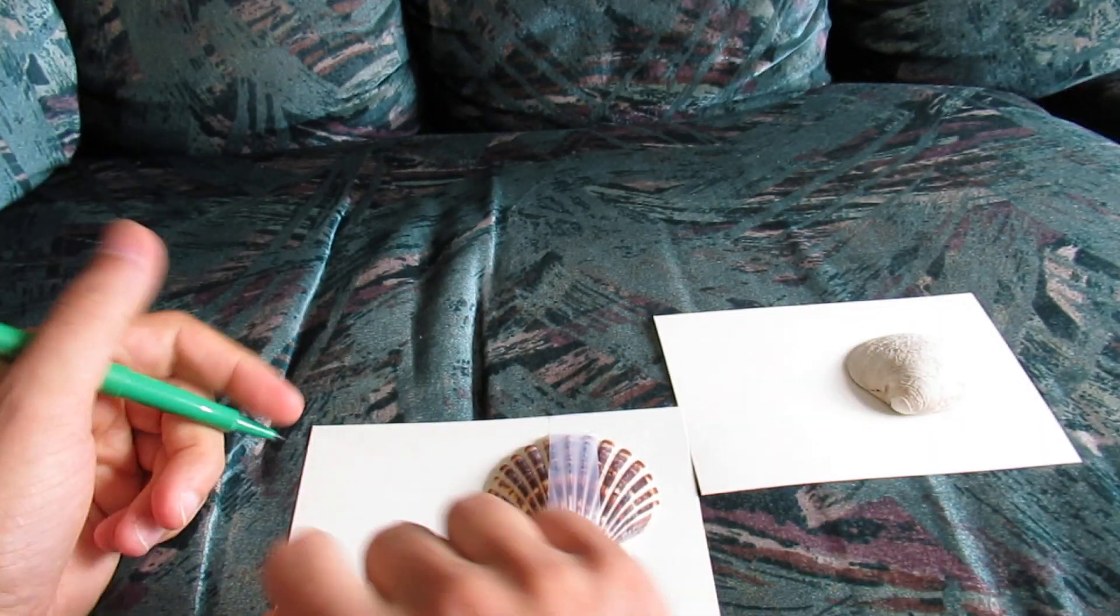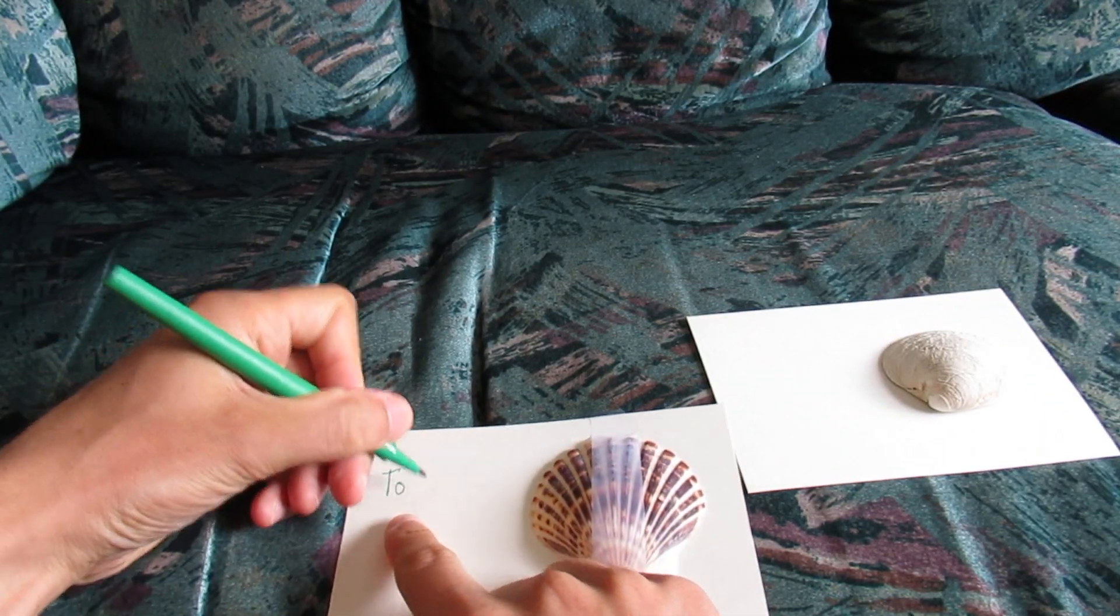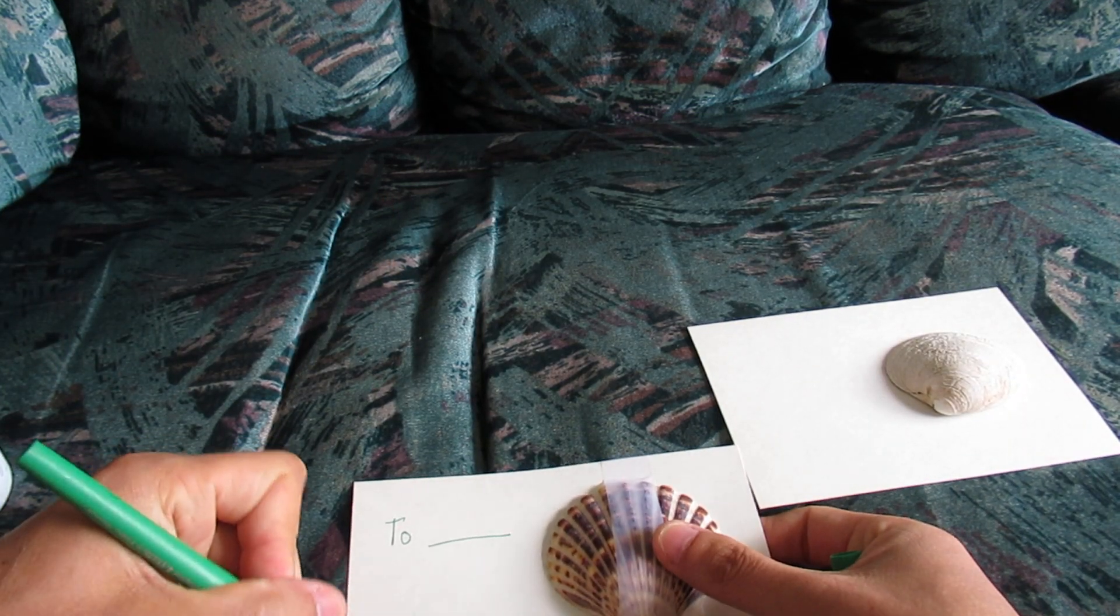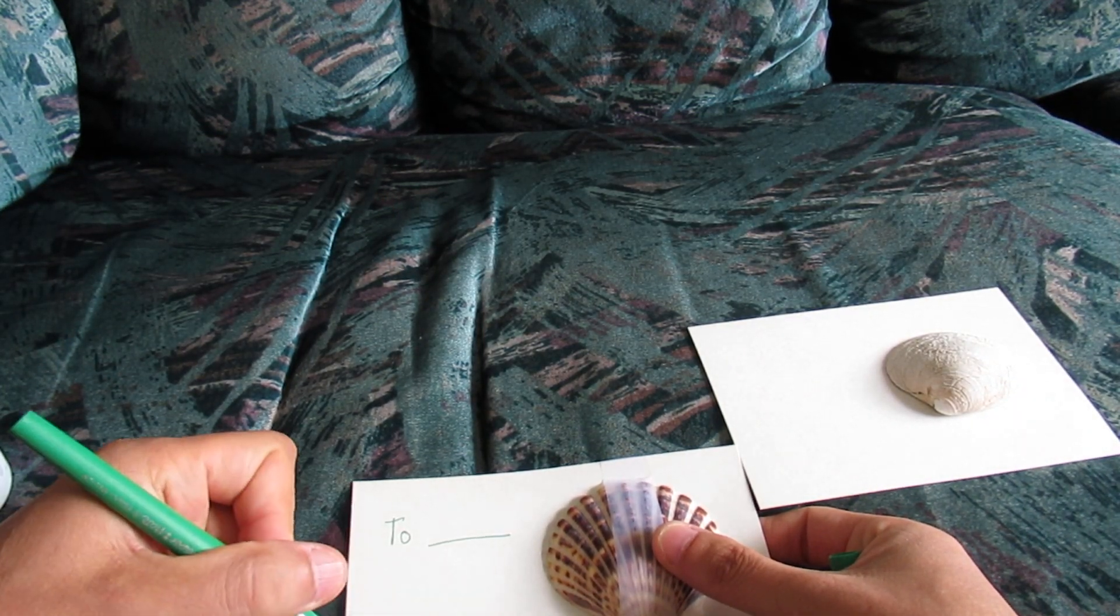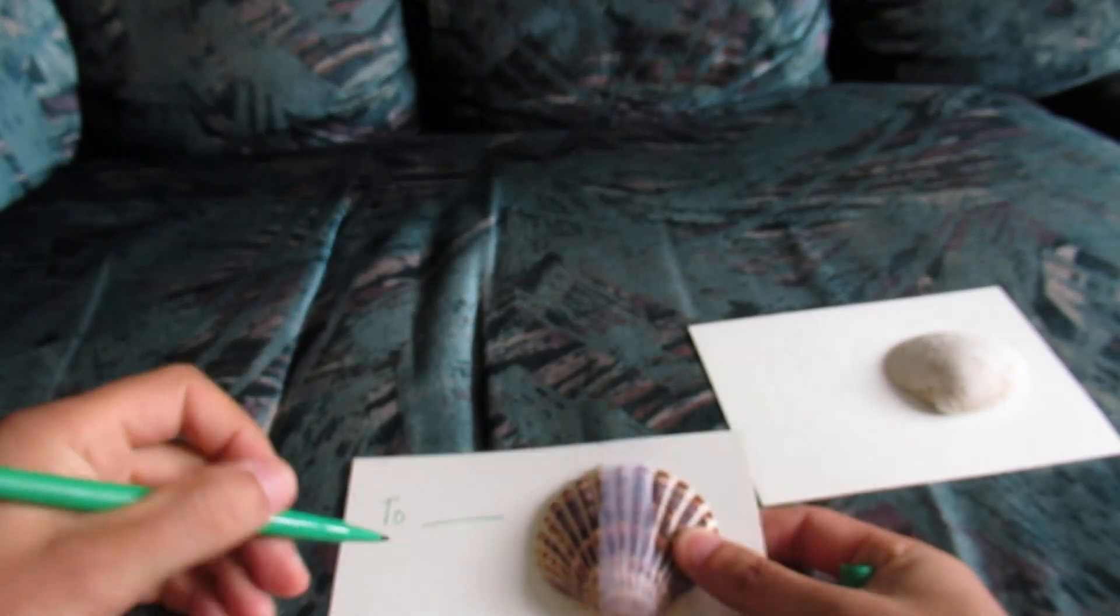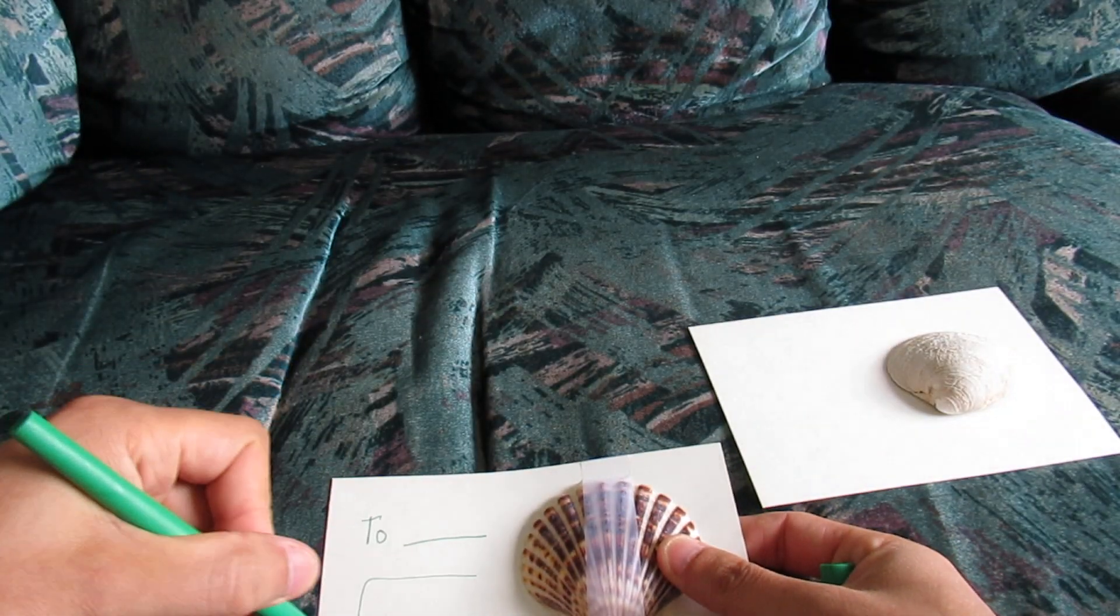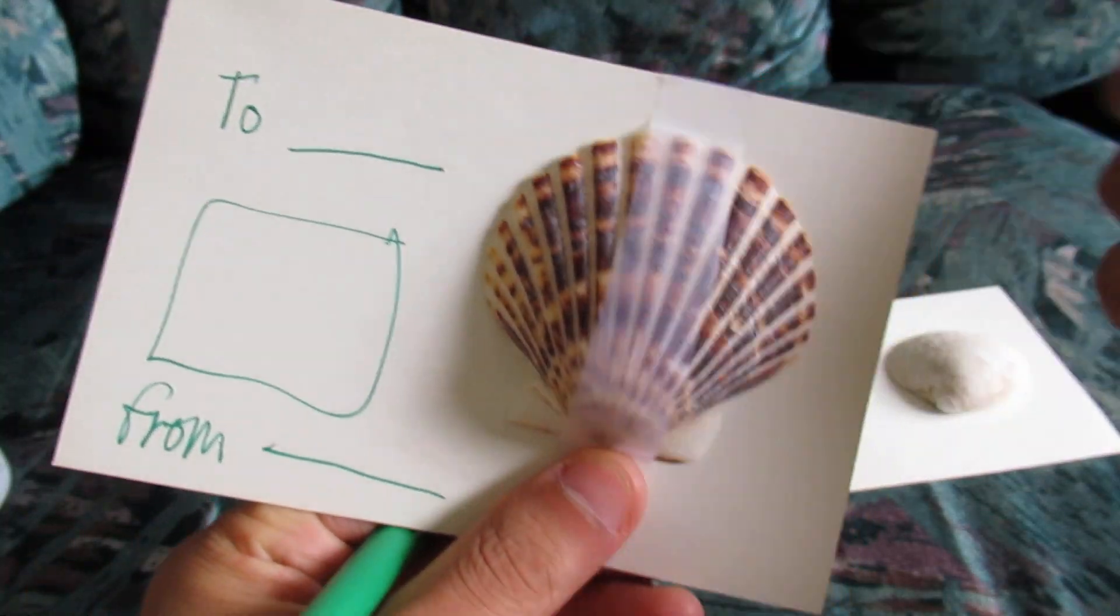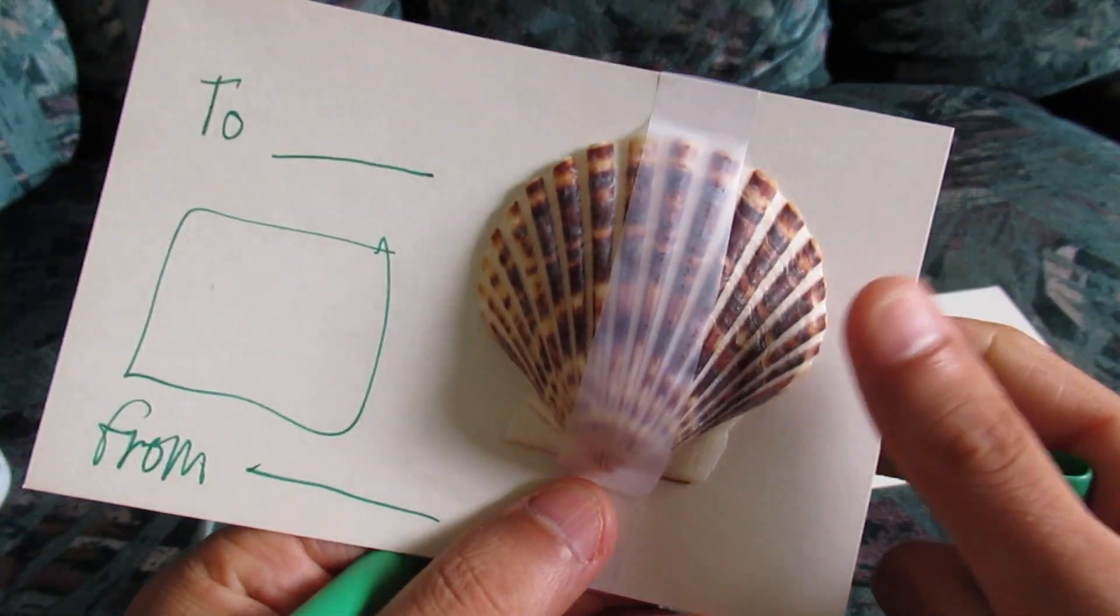And on the left-hand side, you can write your message to, and then you could put the person's name and you could put from. My handwriting's not very good on this couch. From, and then you could put your message here, right here. So a nice personalized message with a seashell or a rock or something of that nature.